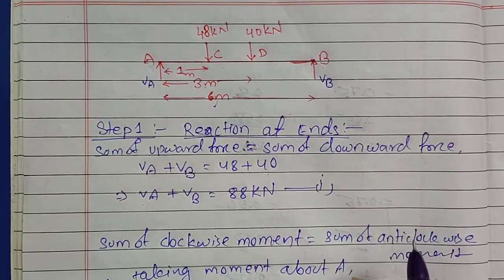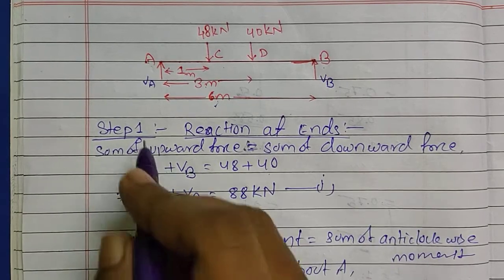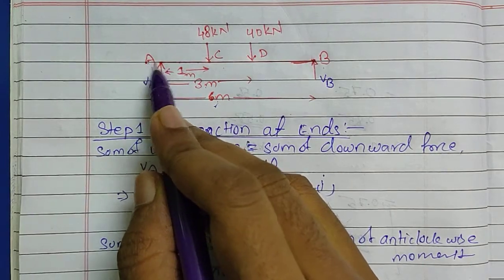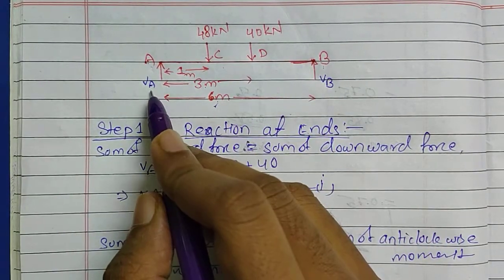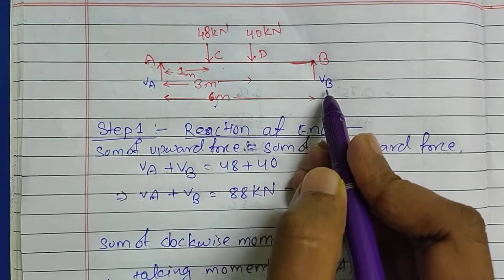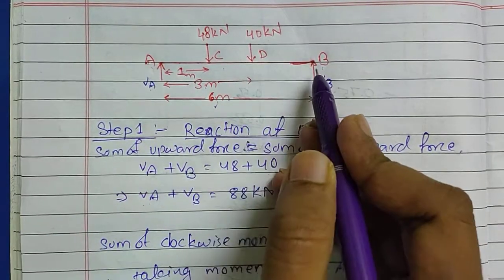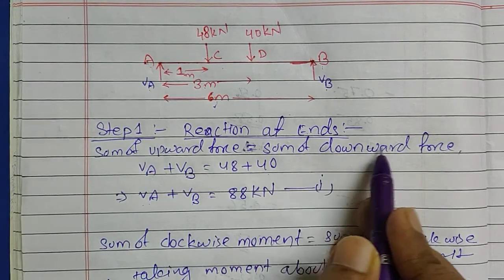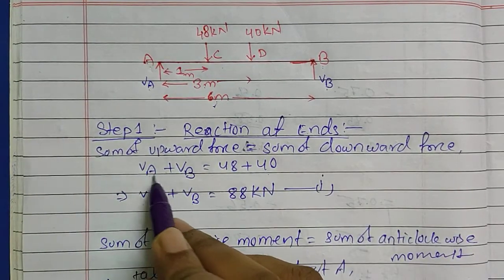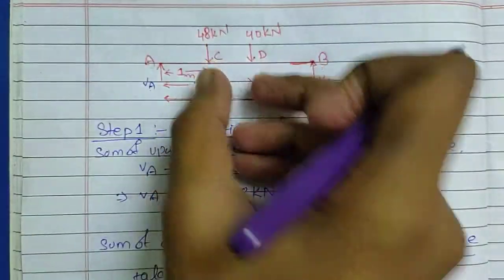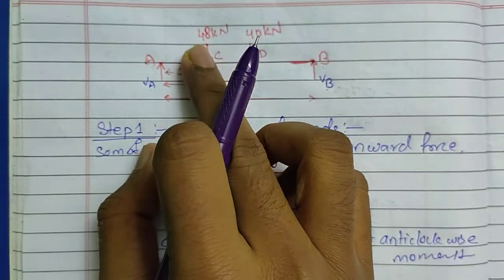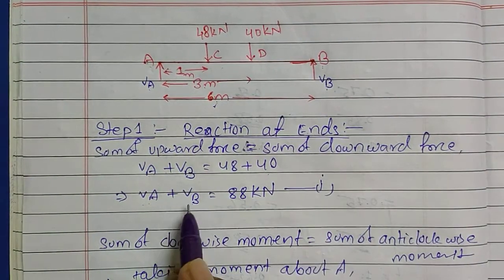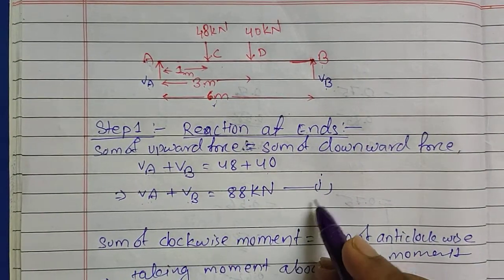Our first step is to find the reactions at the ends — we have to find reaction VA and VB. For that, I have assumed reactions VA and VB at A and B. We remember that the sum of upward forces equals the sum of downward forces: VA plus VB equals 48 plus 40 kilonewton, giving us VA plus VB equals 88 kilonewton — this is Equation 1.